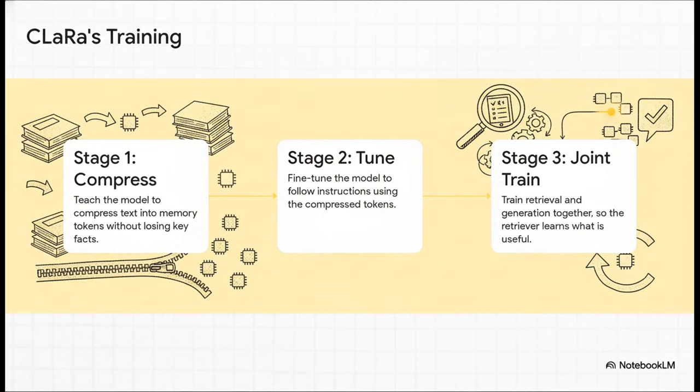Now, of course, this doesn't just happen by magic. CLARA has to go through this really clever three-stage training process. First, it learns how to be a semantic zipper. That's a great term for it. Compressing huge documents into these tiny memory tokens without losing the important stuff. Then, it learns how to actually understand commands using these new summaries. And finally, the really cool part, it learns how to retrieve the exact right memory token needed for any question, and it's a process that it's constantly refining.